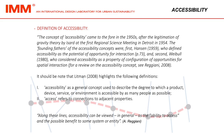It should be noted that Liedmann highlights the following definitions. Accessibility as a general concept used to describe the degree to which a product, device, service or environment is accessible by as many people as possible. Access refers to connections to adjacent properties. Along these lines, accessibility can be viewed, in general, as the ability to access and the possible benefit to some system or entity.